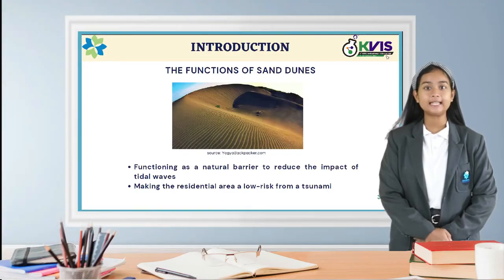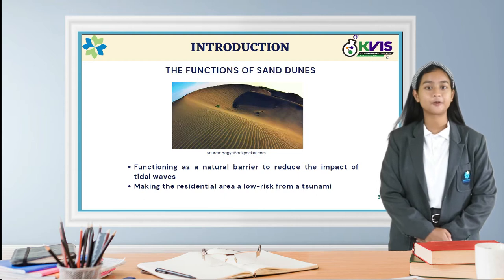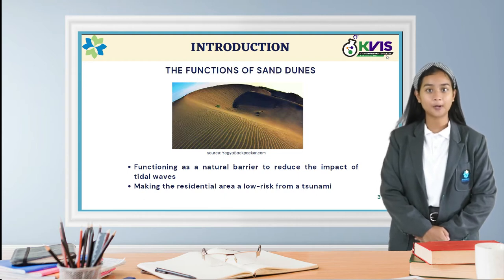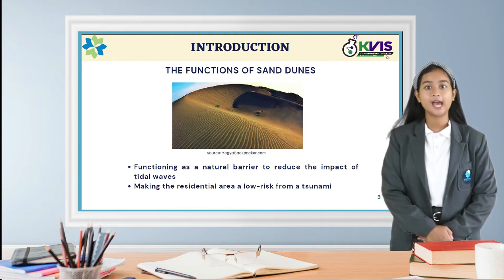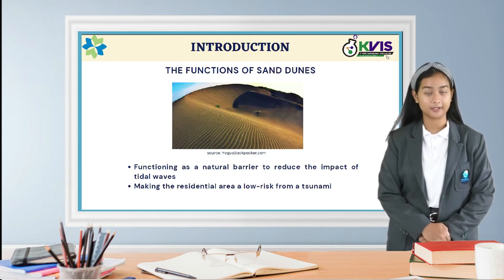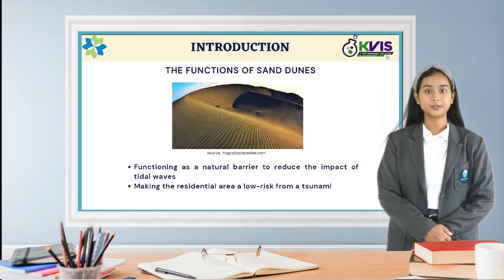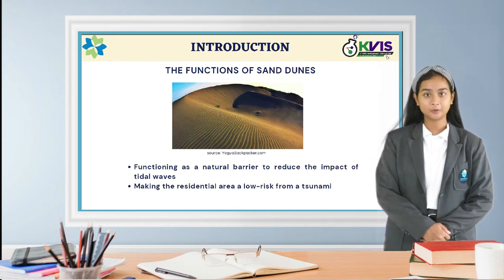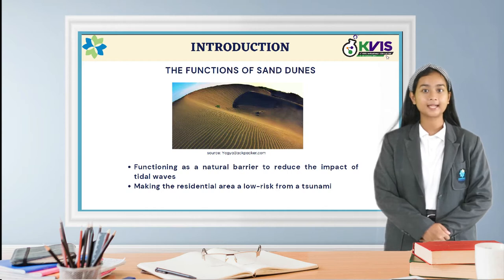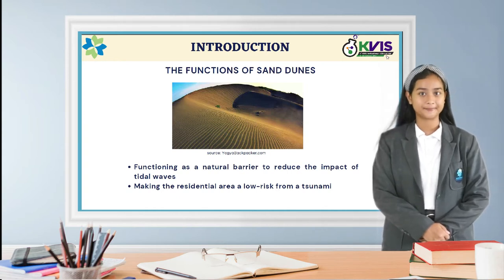First, let's begin with the introduction. Generally, a sand dune is a typical landform that is formed upon the beach, and you may have heard several types of it. It plays an important role to act as a natural barrier to reduce the impact of tidal waves and make the residential area low-risk for a tsunami.